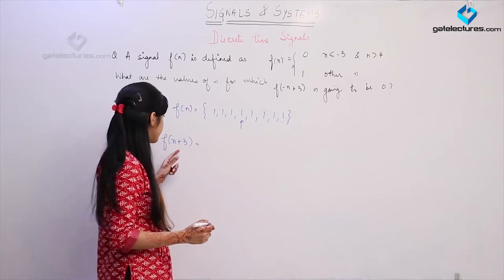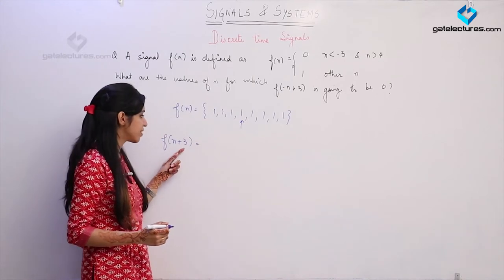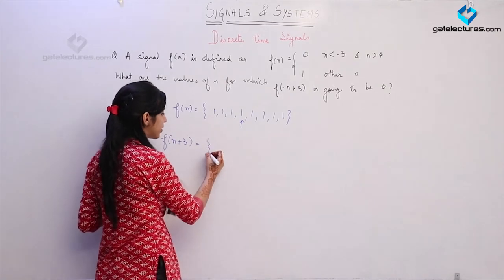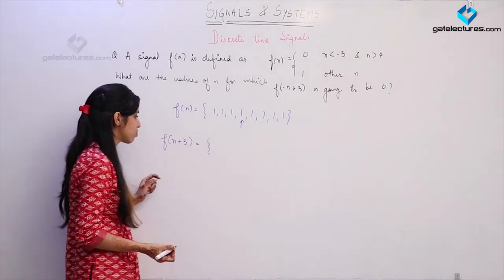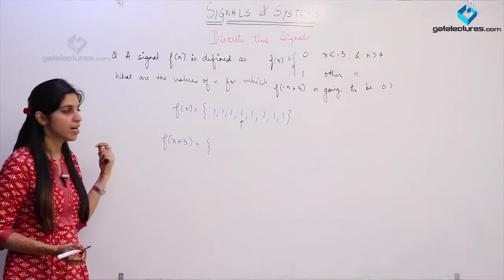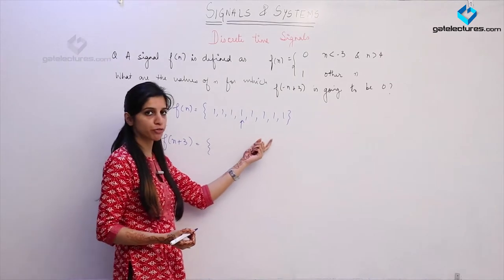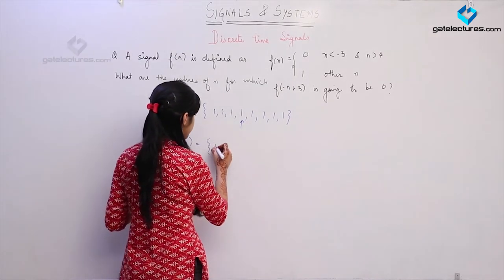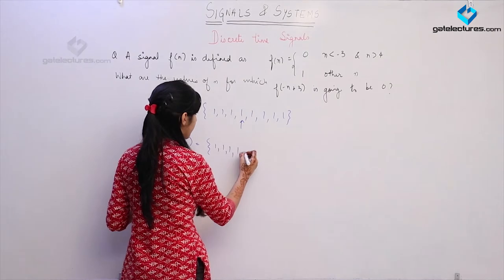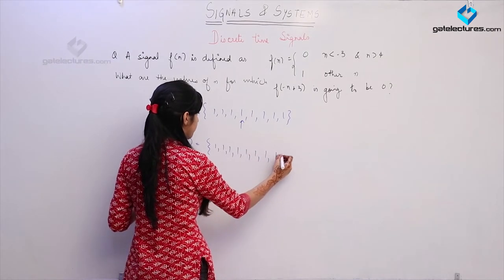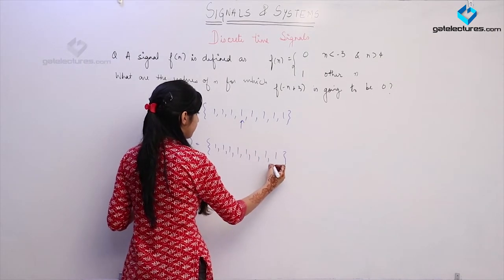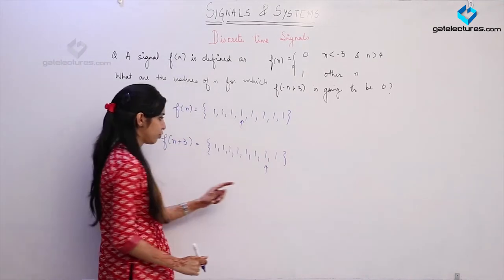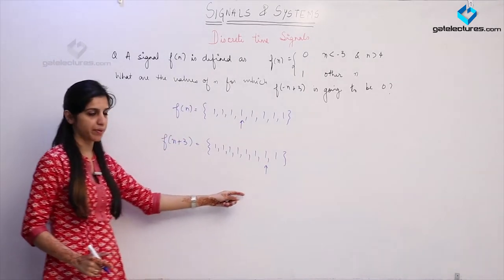When performing f(n+3), this is a time advance or left shift. We have already discussed that when performing a left shift, this marker is going to shift to the right by 3 units. So this marker is going to fall here.